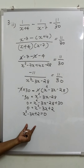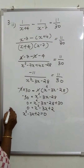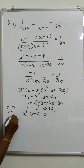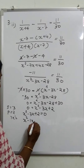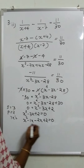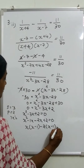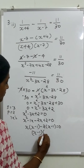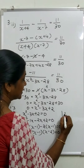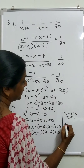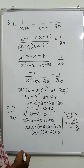We solve this by factorization since it is easier here. Sum is minus 3 and product is 2, so the factors are minus 1 and minus 2. We get x squared minus x minus 2x plus 2 is equal to 0, that is x minus 1 into x minus 2 is equal to 0. Equating each factor to 0: x is equal to 1 and x is equal to 2.